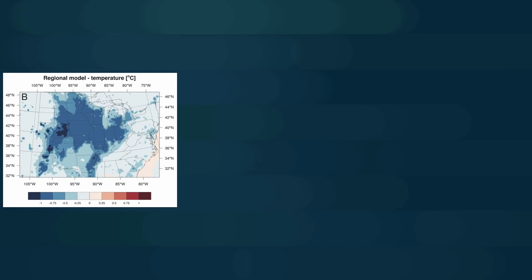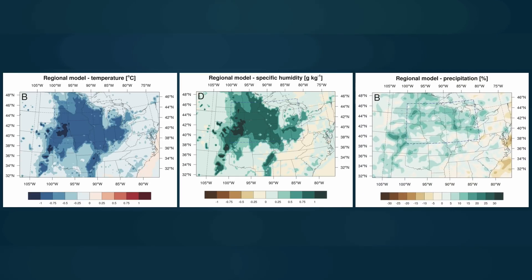The results showed local decreases in temperature and increases in humidity and rainfall that were similar to the trends observed in the historical data.